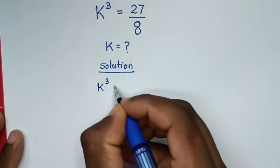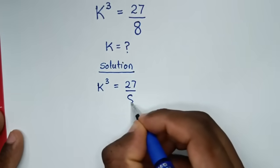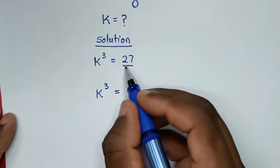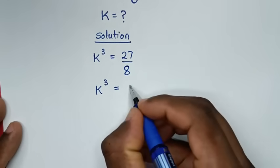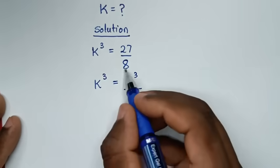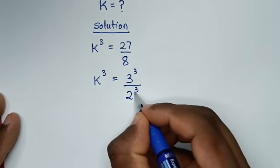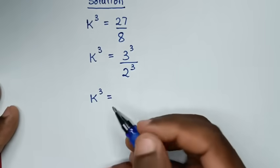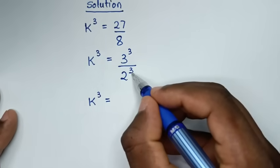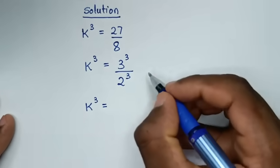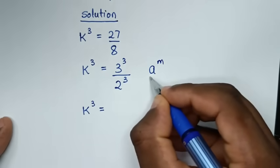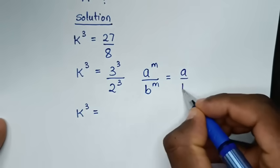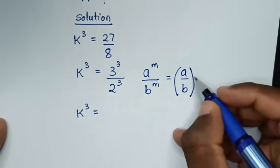From the problem, k power 3 is equal to 27 over 8. Then it will be k power 3 is equal to 27 — which is the same as 3 power 3 — over 8, which is the same as 2 power 3. This is in the form of a power m over b power m, which is equal to a over b, power m.